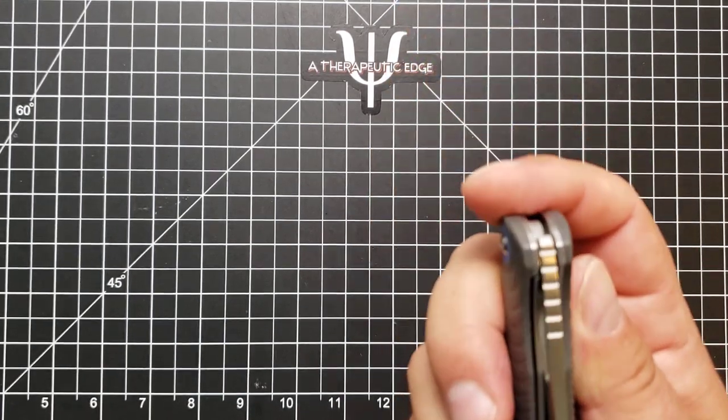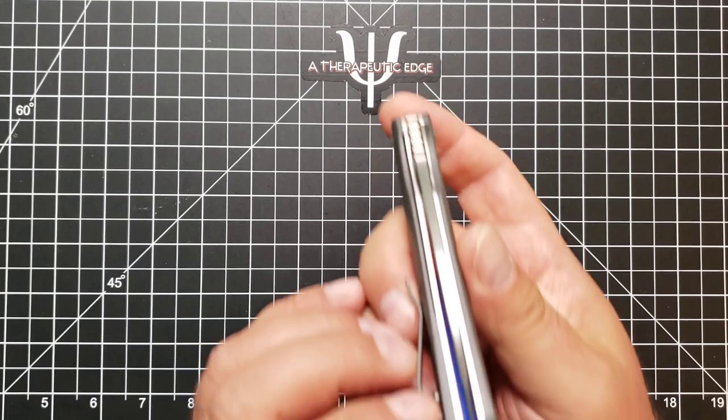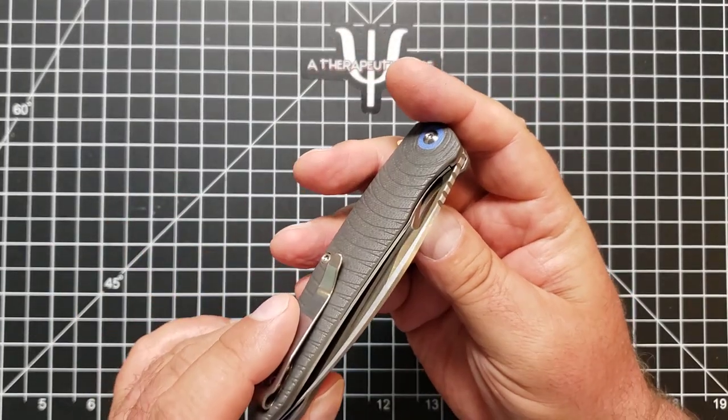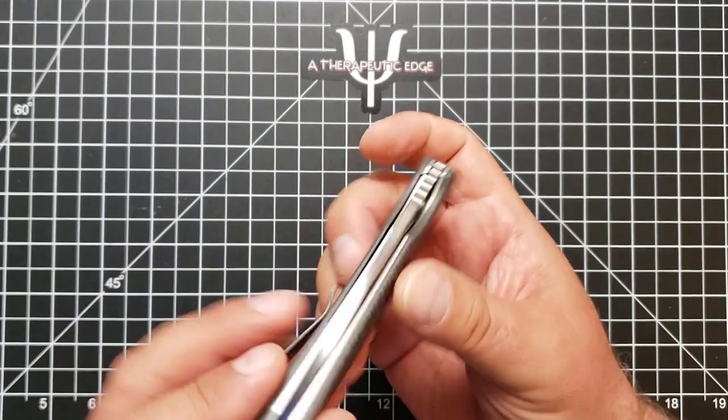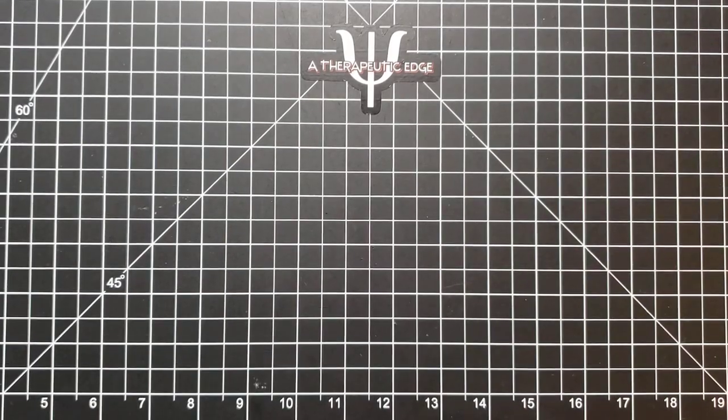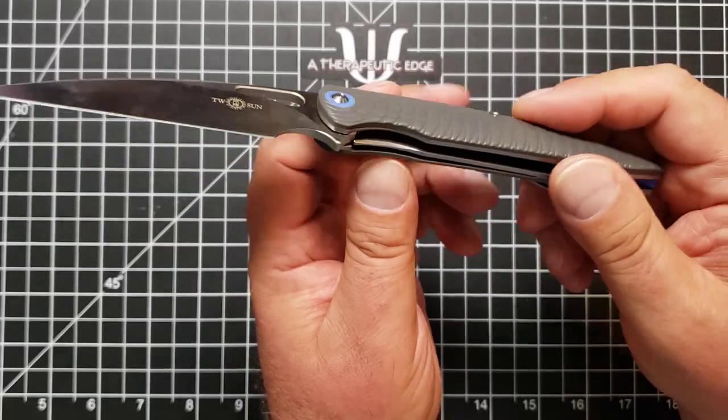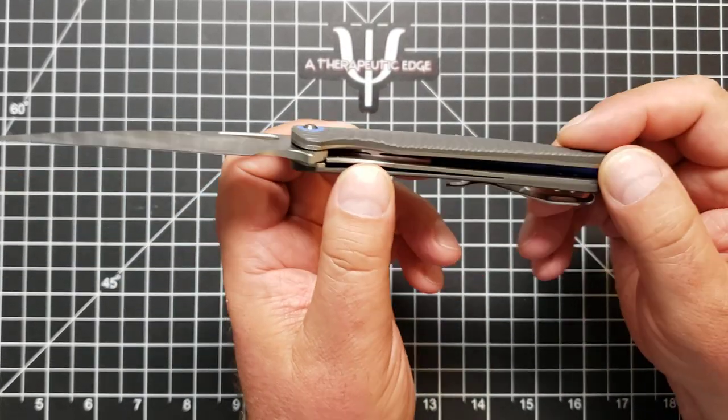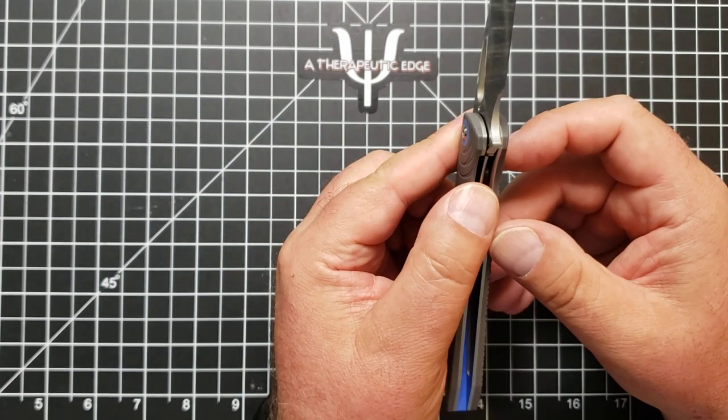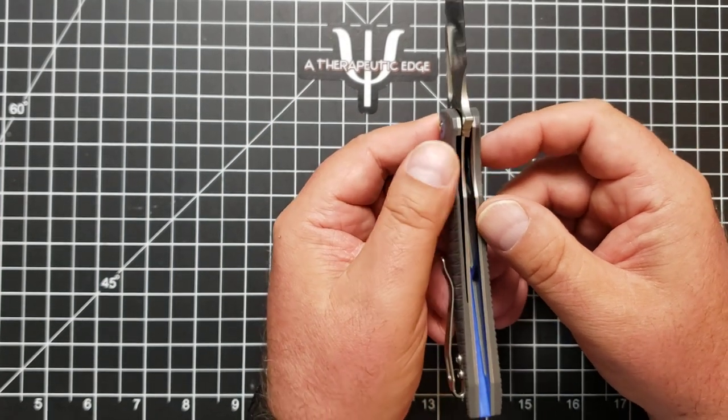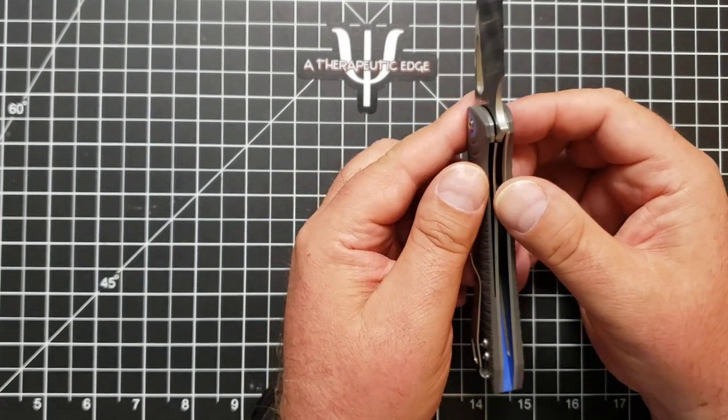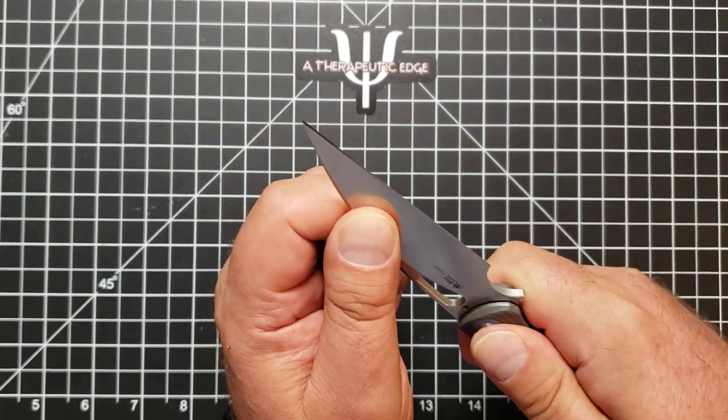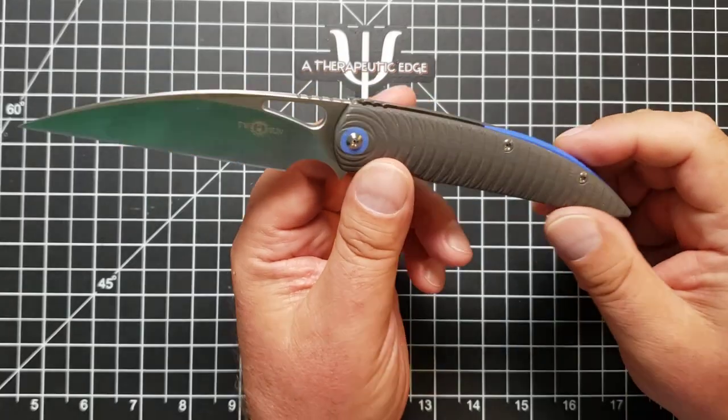It came, interestingly enough, it is just a little bit to the show side. I hadn't really looked at it yet. The liners are reasonably thick. Lockup is fairly early. We're probably about 25%. But it doesn't offer any wiggle. No blade play, no lock rock, no nothing. It is solid.